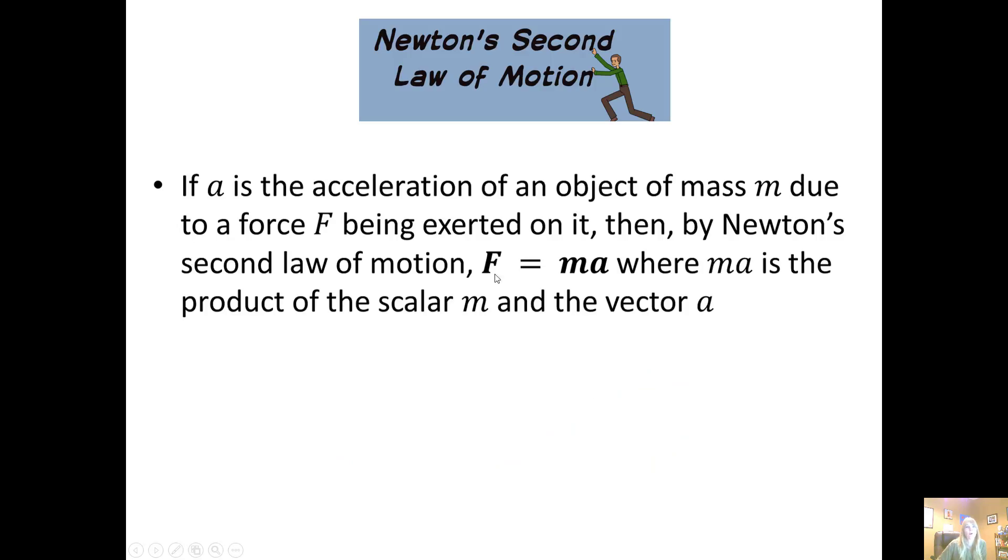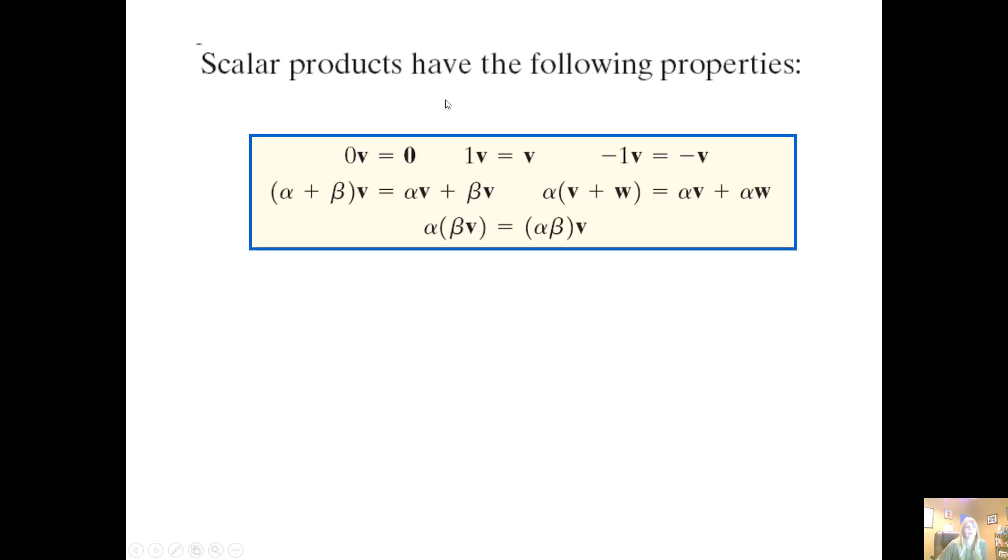You've heard your entire life that force equals mass times acceleration. This is actually a force vector, and we'll talk about force vectors as well. Scalar products have the following properties: zero times a particular vector is the vector zero, one times a vector gives you the vector back, negative one reverses direction. If I have (alpha plus beta)v, I can distribute and multiply both by the scalars. Similarly, alpha(v + w) = alphav + alphaw, and alpha(betav) = (alphabeta)v.